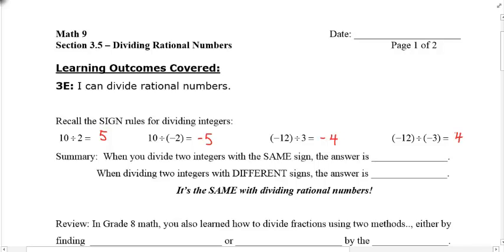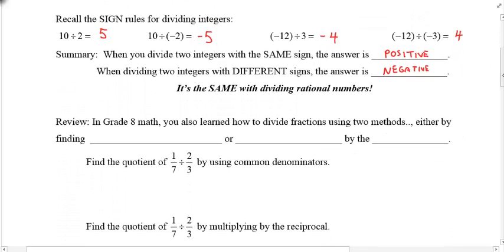What's going on here? It's just like multiplying. When they have the same sign, the answer is positive. Two different signs, the answer is negative. So keep that in mind, and let's do some dividing.